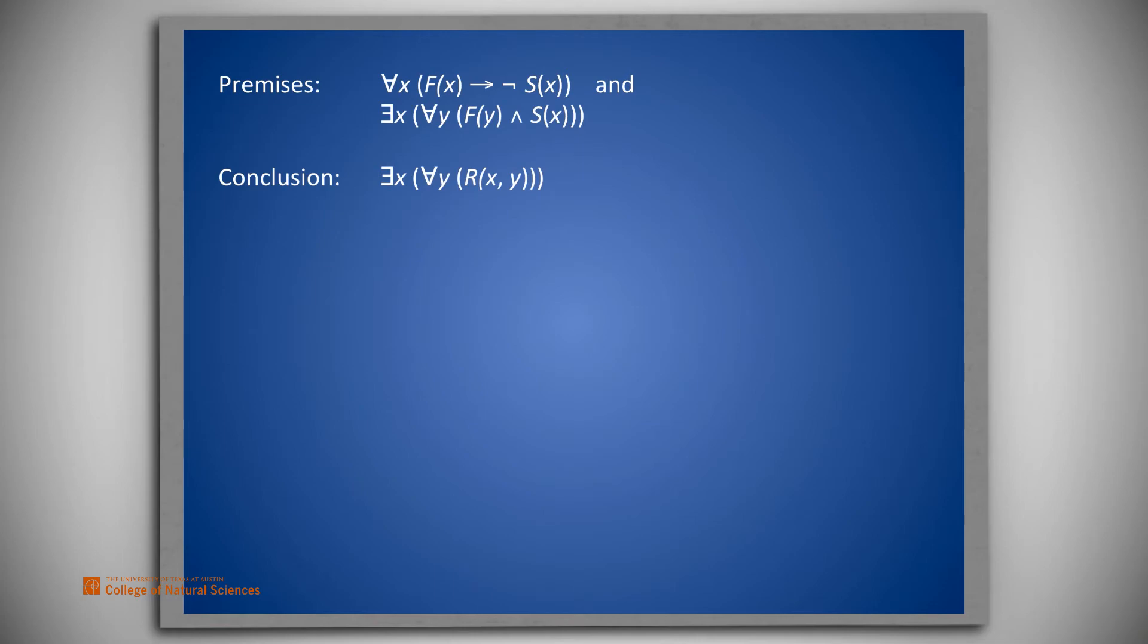Let's see if we can get contradictory premises. To do so, we look at the two premises and, for the moment, ignore the quantifications. We see f and s in the second premise, and f implies not s in the first. Clearly, having f from the second premise would then imply not s from the first. But then, we would have not s and s holding at the same time. Those would be our contradictory premises.